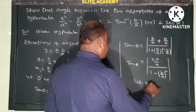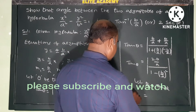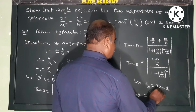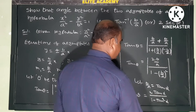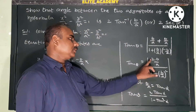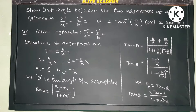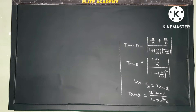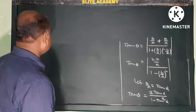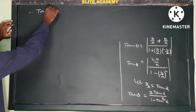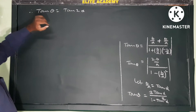Let b/a = tan α. Substituting b/a = tan α, tan θ becomes 2tan α / (1 - tan²α). Since b/a = tan α, 2b/a = 2tan α and 1 - (b/a)² = 1 - tan²α. So tan θ = 2tan α / (1 - tan²α), which is the formula for tan 2α. Therefore, tan θ = tan 2α.